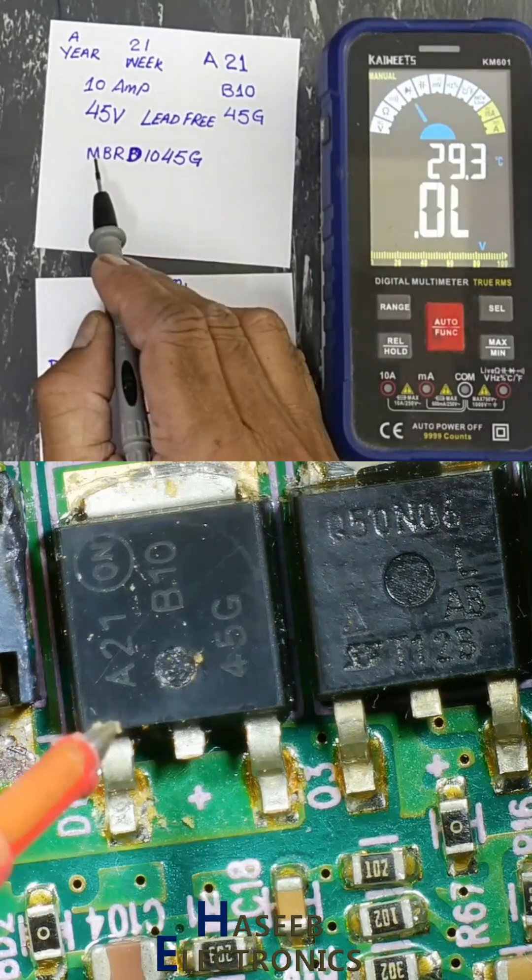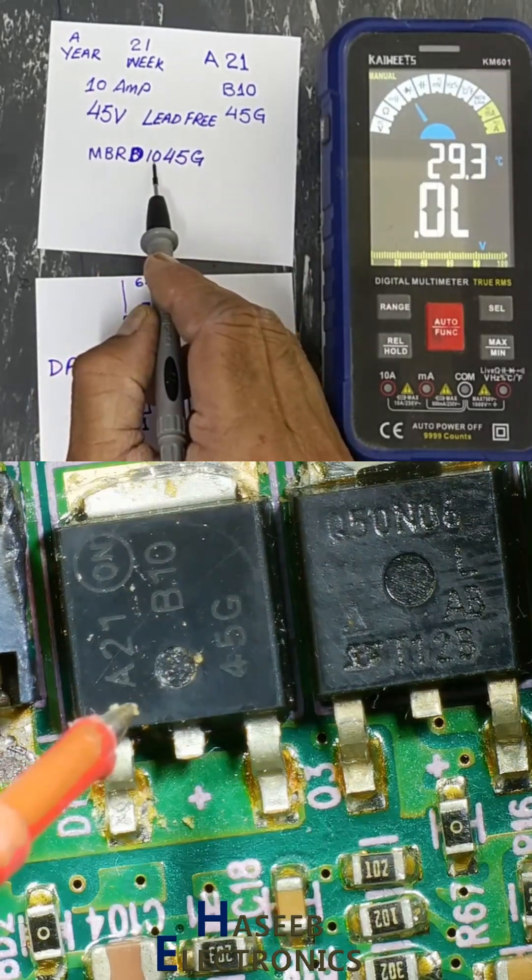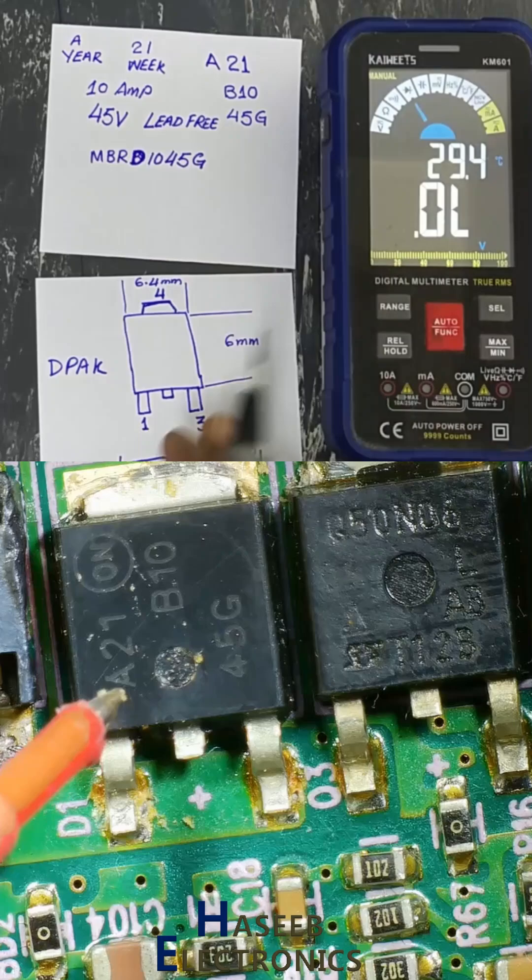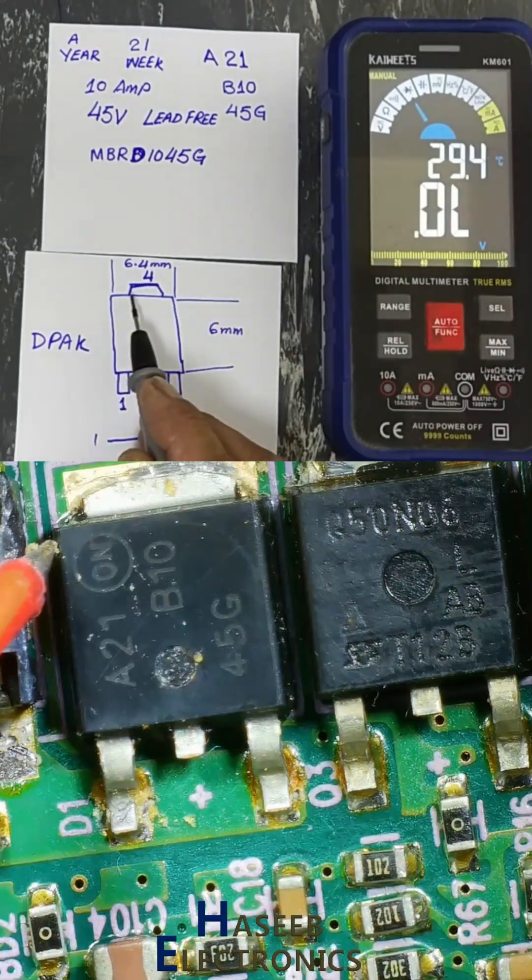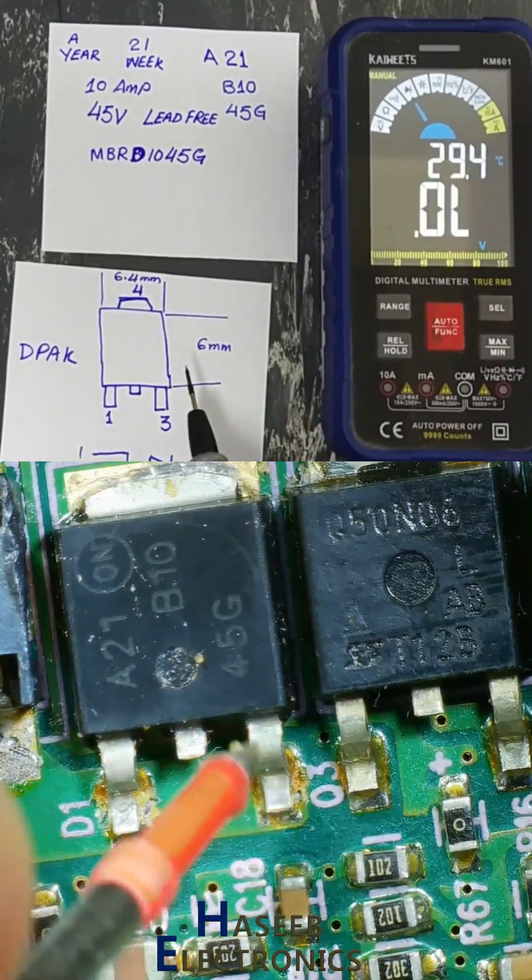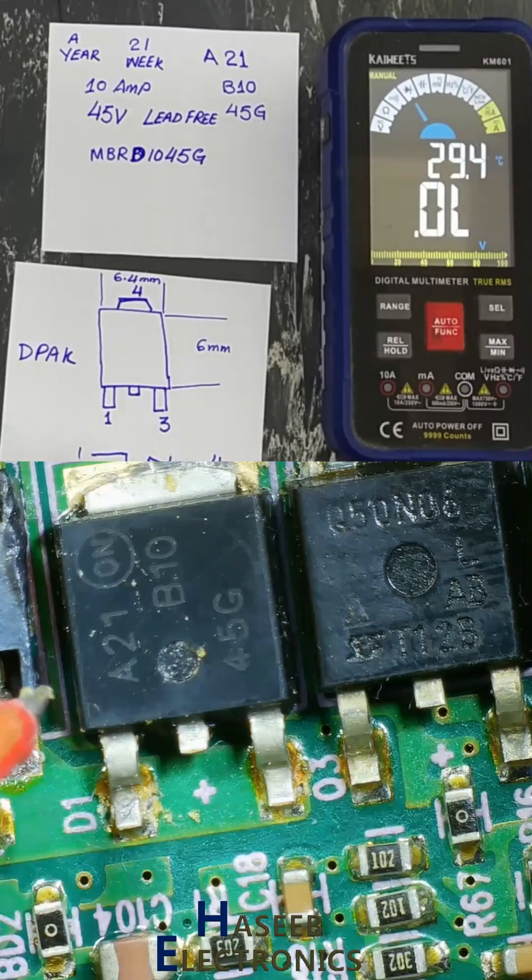Part number MBRD1045G. Measurement from here to here 6.4 millimeter, from this point to this point 6 millimeter. It is the D-PAK package.